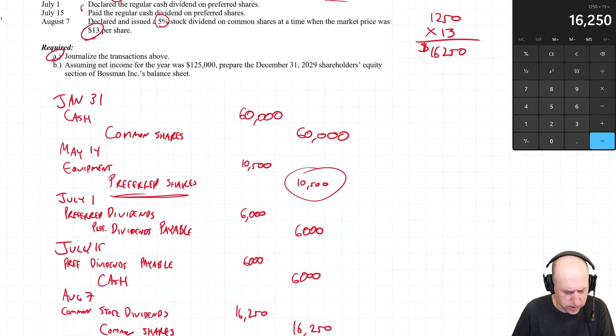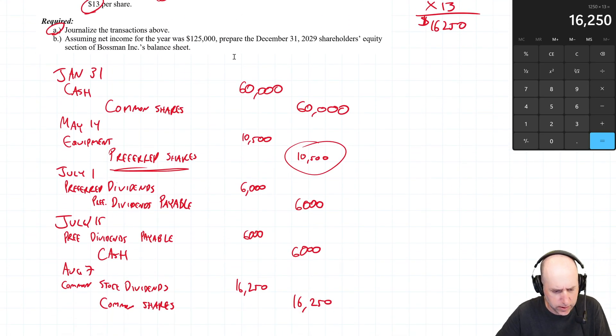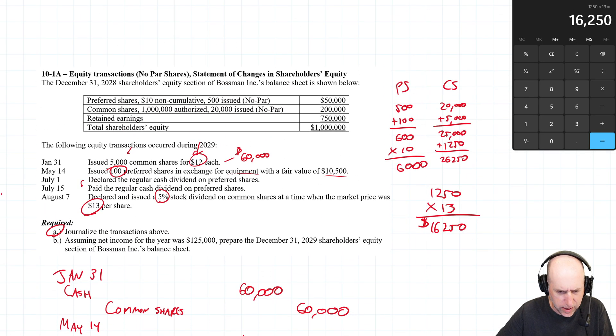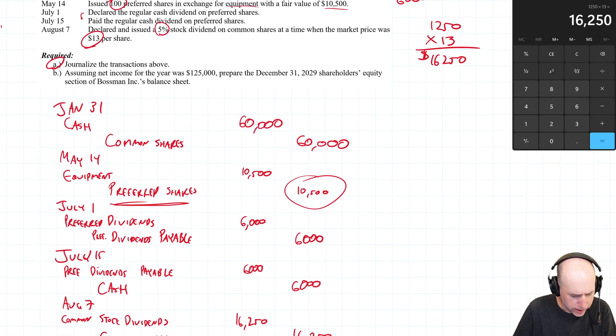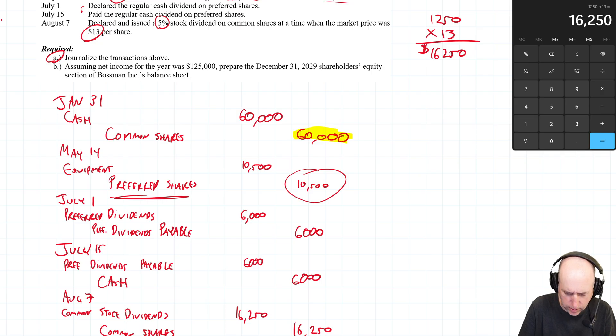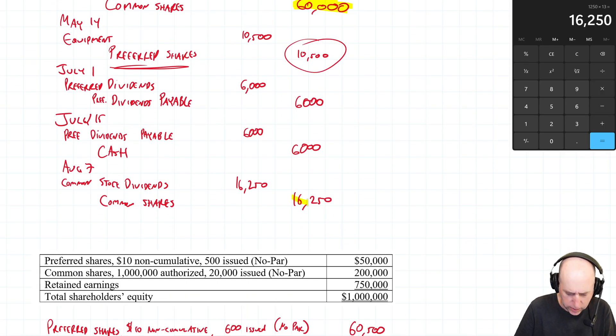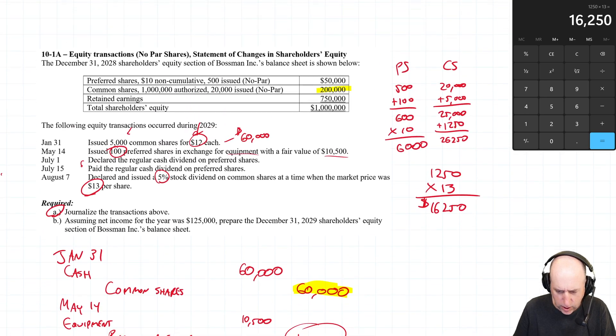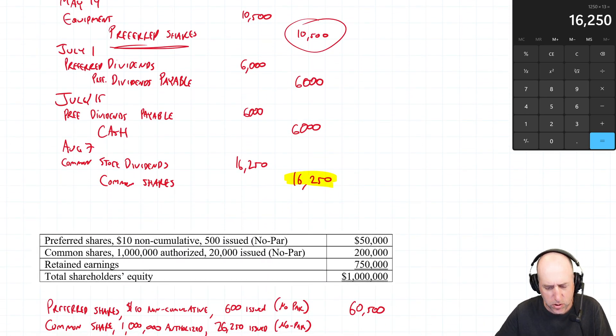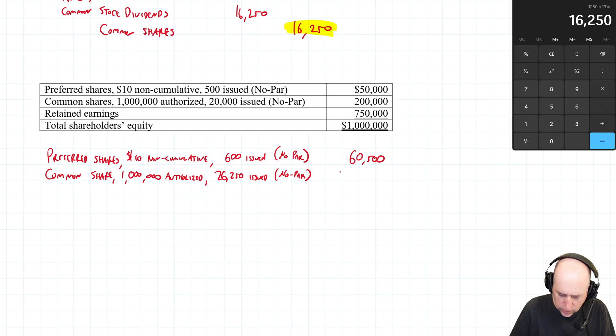What's the value of the common shares? Well, let's check what we credited common shares for. So, the opening balance, 200,000. Then I credit common shares for 60, so we're up to 260. Then I credit common shares for 16, and that's it. No other credits to common shares. So, 200 plus 60 is 260, plus 16, 276,250.